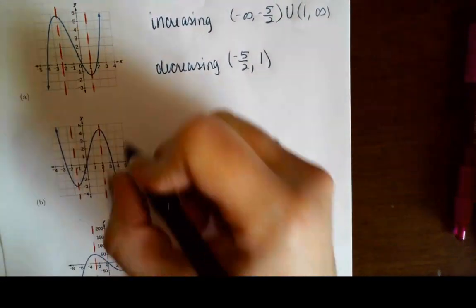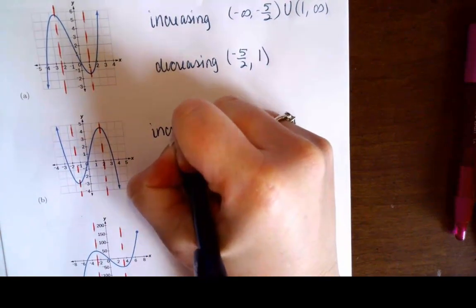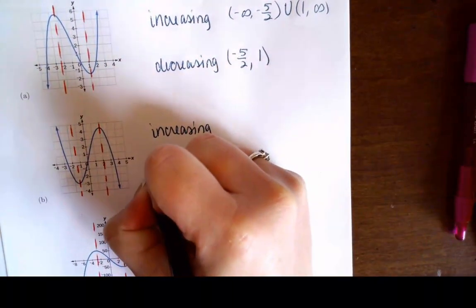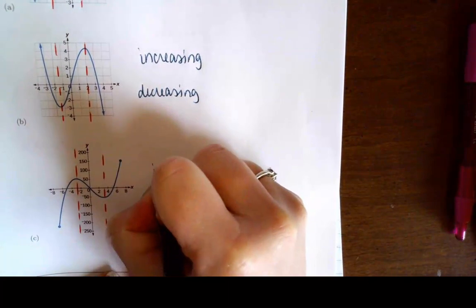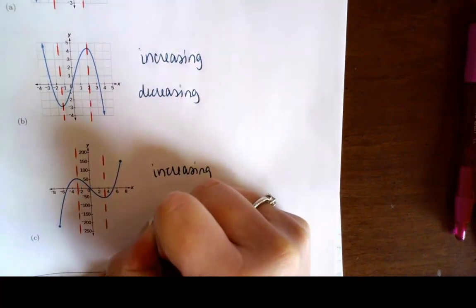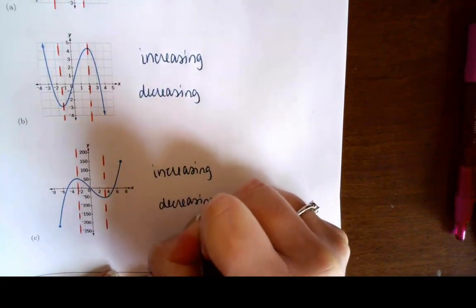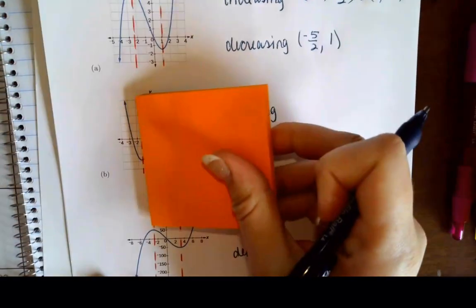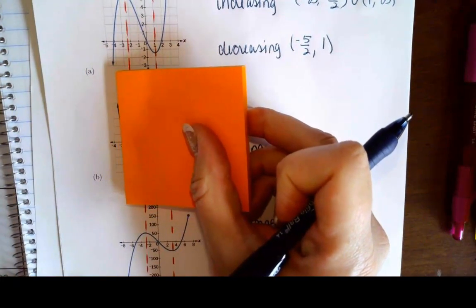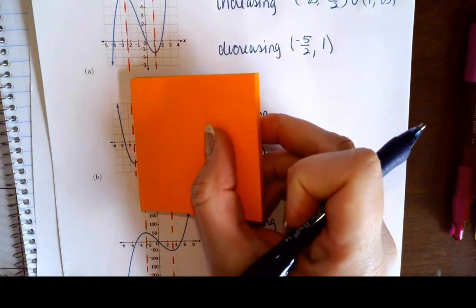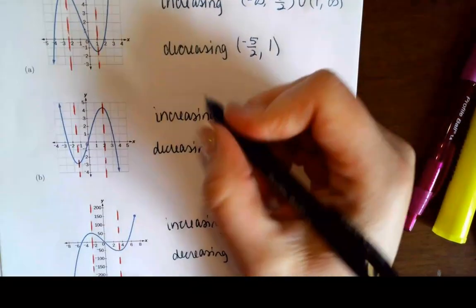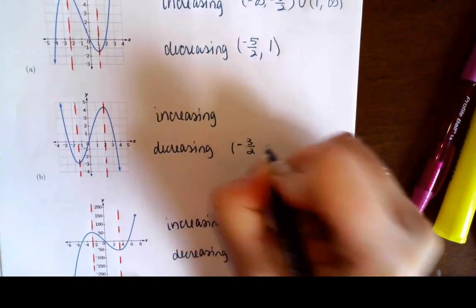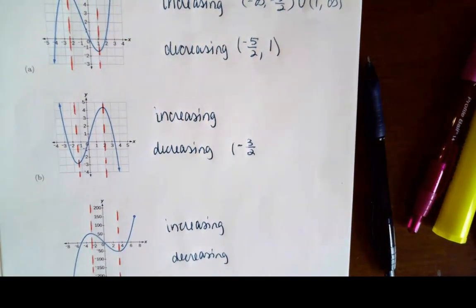Let's write increasing and decreasing, then come back and do the absolutes and locals. Reading from left to right on the second graph, he is dropping down until he hits right there — that x value is negative one and a half, which is negative three halves. So he's decreasing from negative infinity to negative three halves.